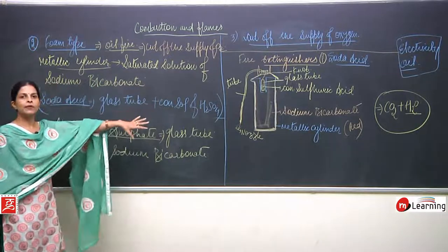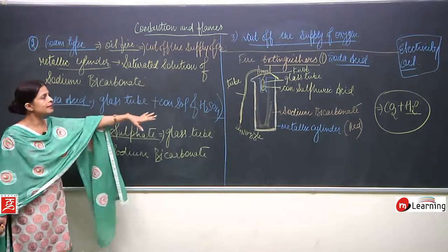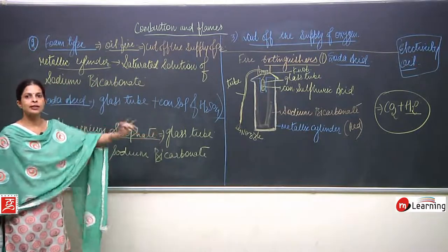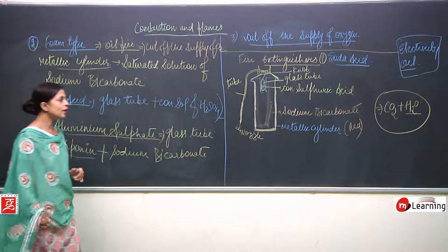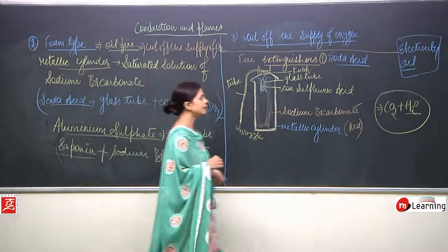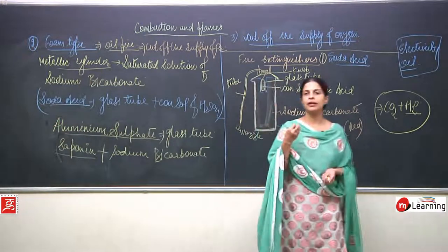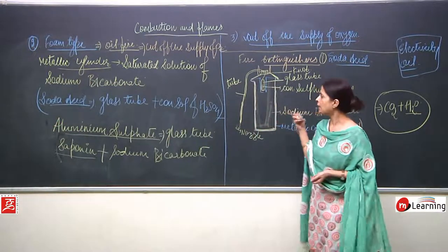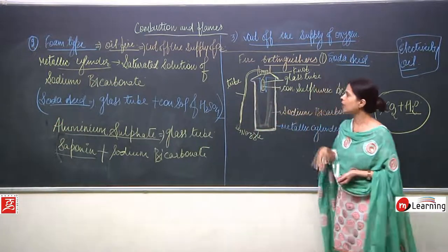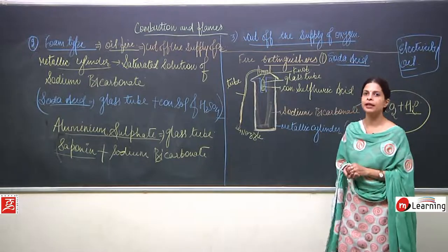There are three types of fire extinguisher: soda acid, foam type, and carbon tetrachloride fire extinguisher. We have discussed the differences between soda acid and foam type; the carbon tetrachloride type will be discussed next.